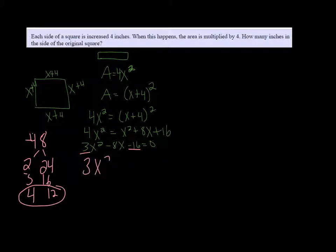So rewriting it, I get 3X squared plus 4X minus 12X minus 16 equals 0.